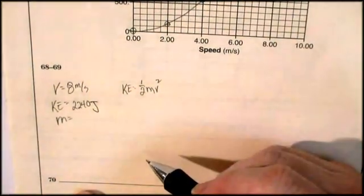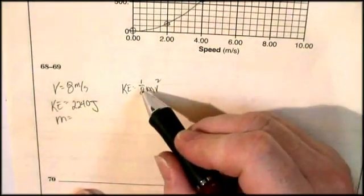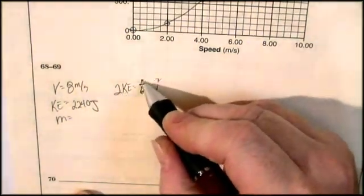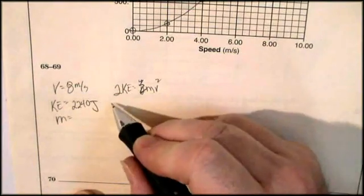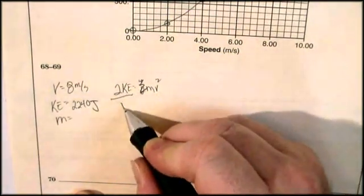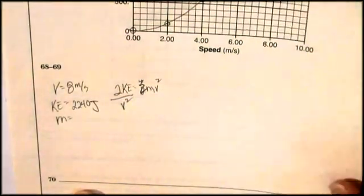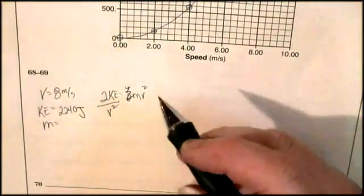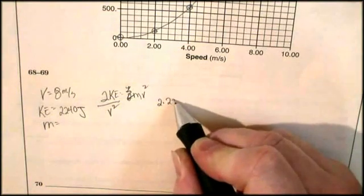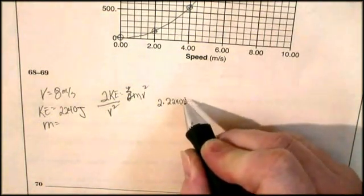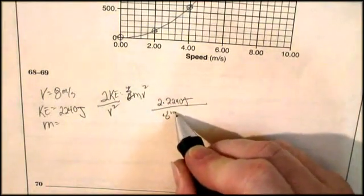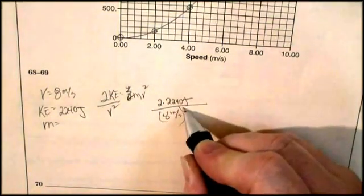The first step in the algebra is, for me, it's always to get rid of the 1 half. How do I get rid of the 1 half? Multiply both sides by 2. 2 kinetic energy equals mv squared. And then divide this equation by v squared. So now I've got 2 times kinetic energy divided by v squared. So let's say 2 times 2240 joules divided by 8 meters per second squared.